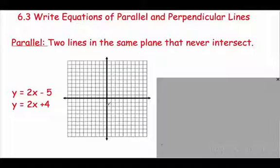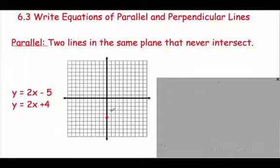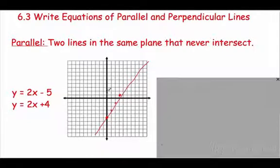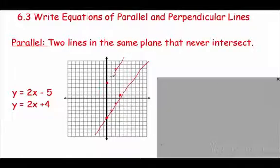I'm going to start at negative 5 — that's my y-intercept. My slope is 2 over 1, so up 2 over 1. Now for 2x plus 4, I start at 4, go up 2 over 1. If I draw this line — all right, those will do.